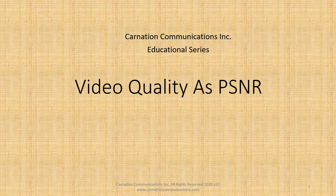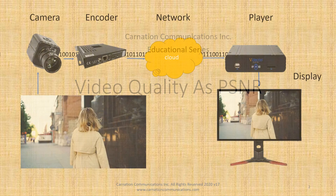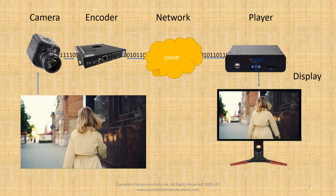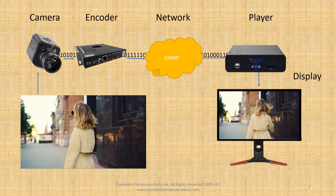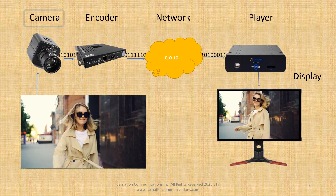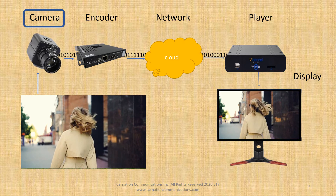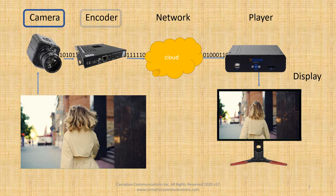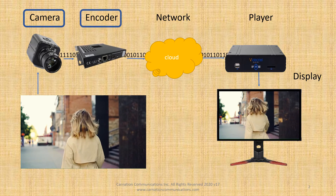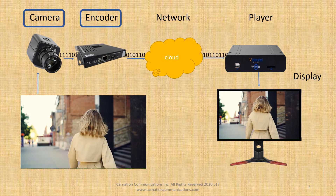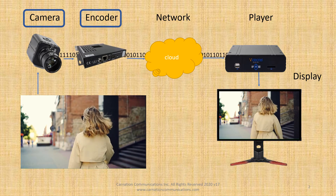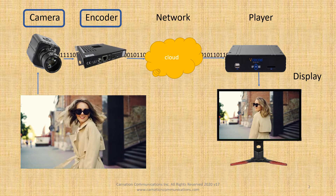Video quality is measured and represented by the PSNR parameter. In a typical setup, we have a camera which captures the live event. We generally do not consider the camera to introduce any distortion, but the encoder, which compresses the video into a reasonable bit stream, is where the bulk of the distortion is being introduced.